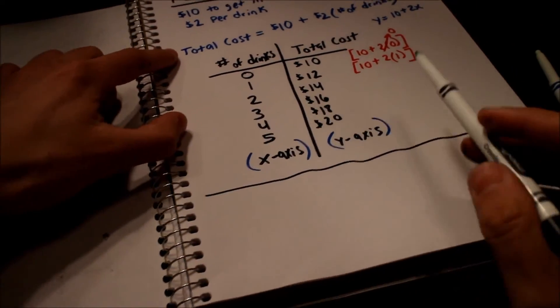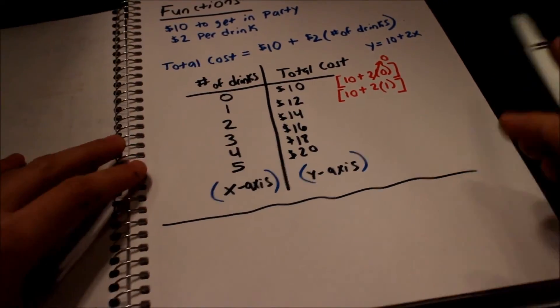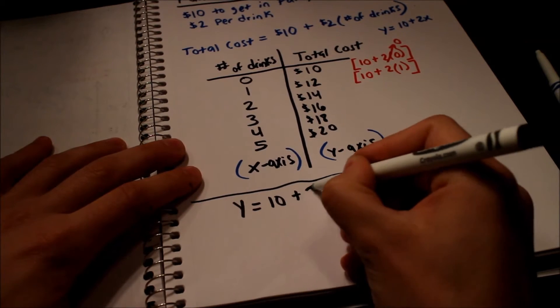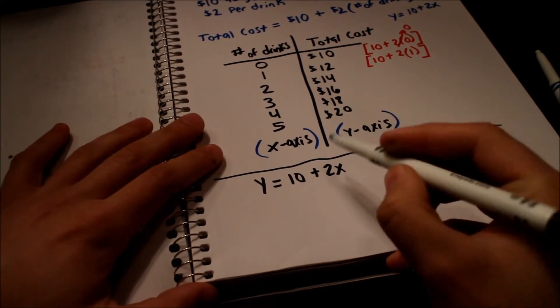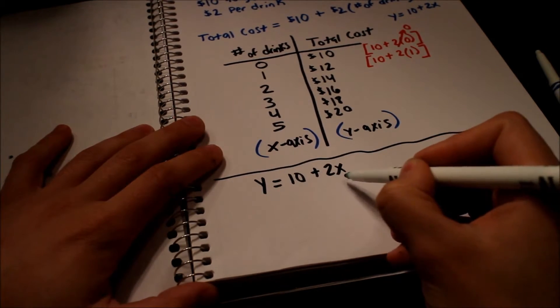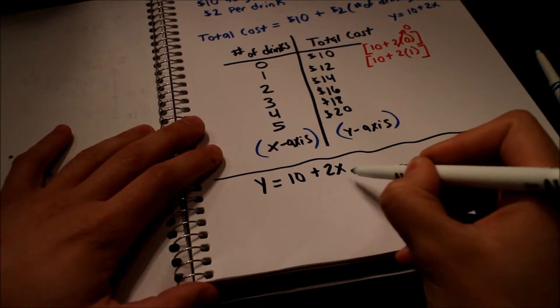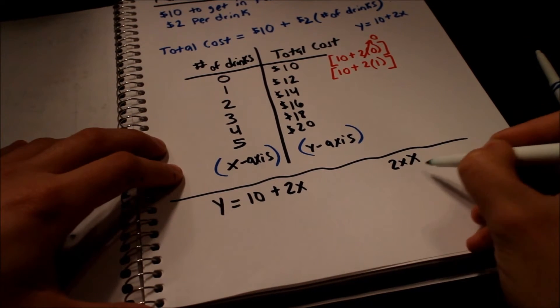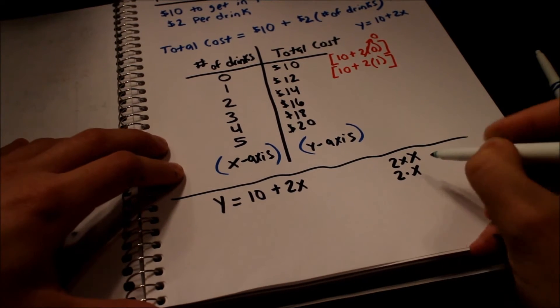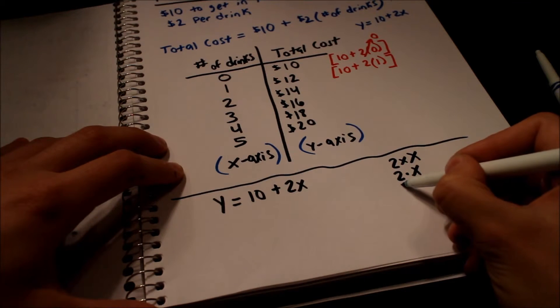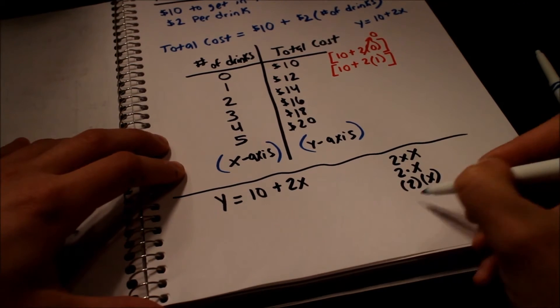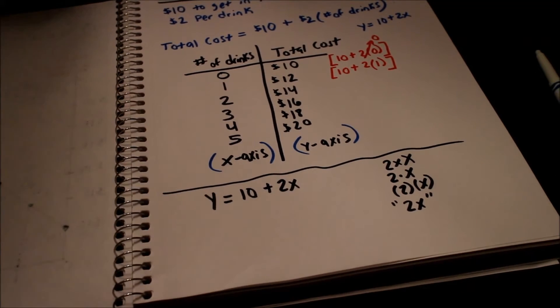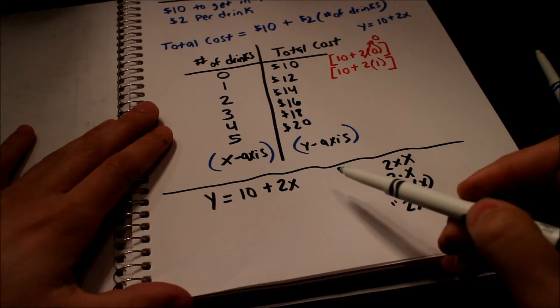Just kind of recap. We said the total cost was ten plus two times the number of drinks. We're saying that's the same thing as y equals ten plus two x. Just FYI, if you didn't know, whenever you write a number next to a letter, you're assuming it's being multiplied. Because you could write two times x, but you see how that can be confusing. Or you could write two dot x, or you could put two times x with parentheses. But the standard convention is just putting it like this, just the two x. Just wanted to point that out.